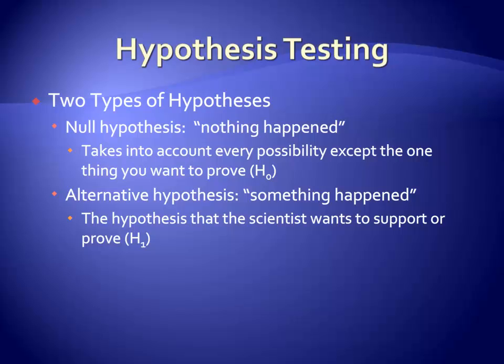The null hypothesis states that there is no relationship between the variables being examined. Another way to put this is that we are hypothesizing that the data in the model is no different from what we would expect based on chance alone. On the other hand, the true hypothesis that we are really interested in is referred to as the alternative or research hypothesis. This states that there is a relationship between the variables in the model.